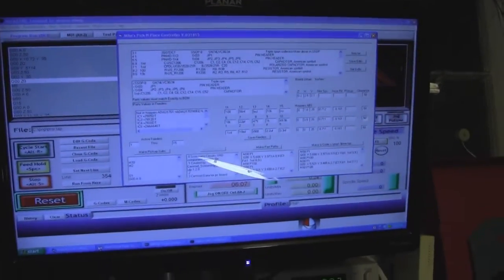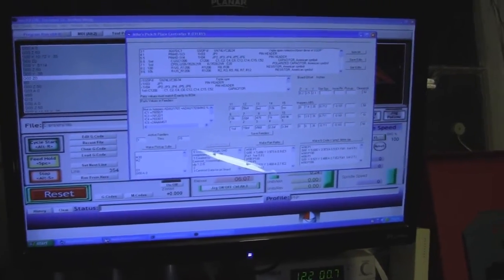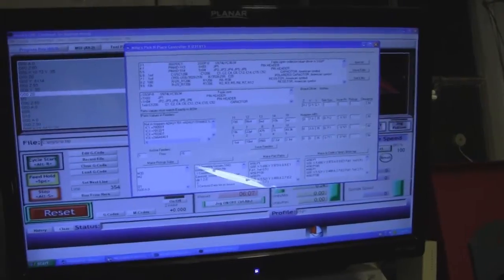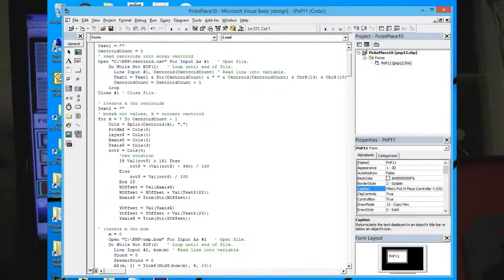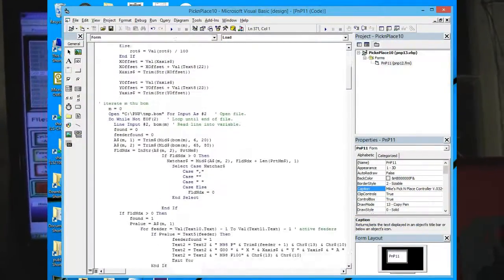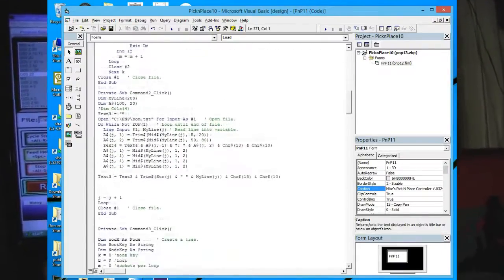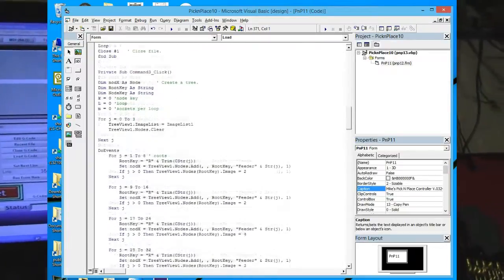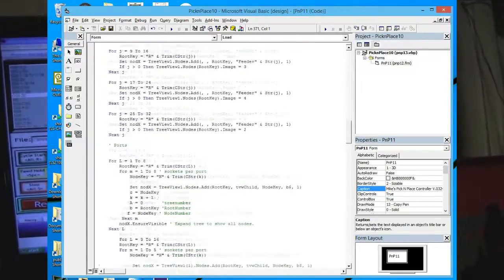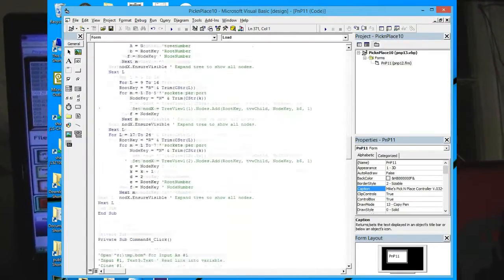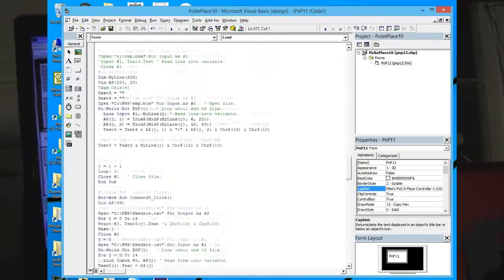Now I wrote some custom software in order to control this pick and place machine. I wrote it in Visual Basic 6. Actually it took a little while to write it but it actually does everything I needed to do—it does the hoppers. You probably can't see this right now. I'll probably do a tutorial on this or whatever just to show you what it does.